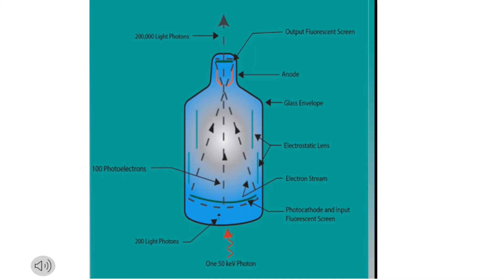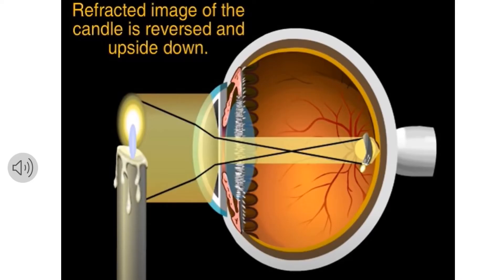This whole concept is similar to the human eye. In the human eye we have the lens, and it flips the light upside down in order to focus it on the nerves in the back of the eye, and it's turned right side up in your brain. Fluoro kind of works the same way.